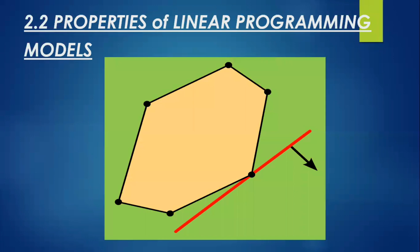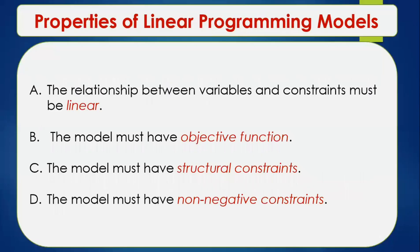We will now discuss the properties of linear programming models. There are four properties. First, the relationship between variables and constraints must be linear. Second, the model must have an objective function. Third, the model must have structural constraints. And lastly, the model must have non-negative constraints.